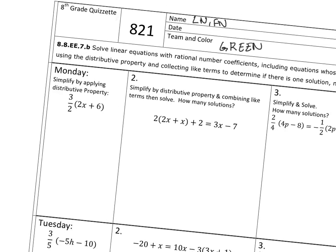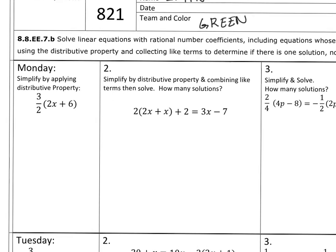Number one says simplify by applying the distributive property. So the distributive property states that when you have a number right outside of a parenthesis, you can distribute that by way of multiplication. So you have to multiply the number that's outside to both terms that are inside of the parenthesis.